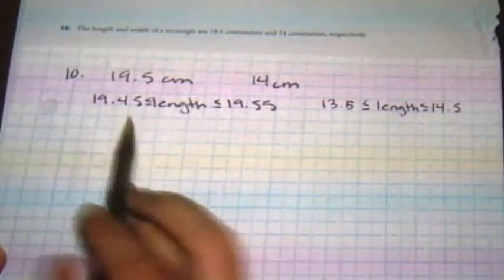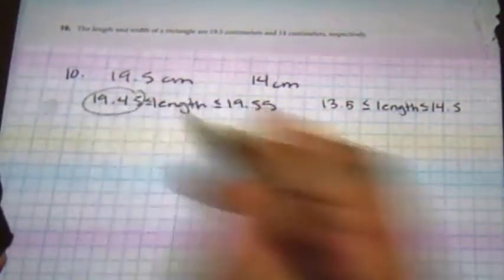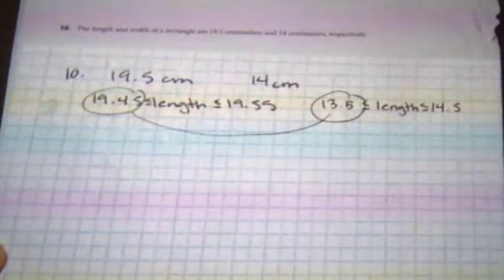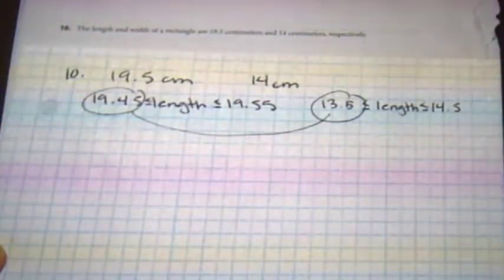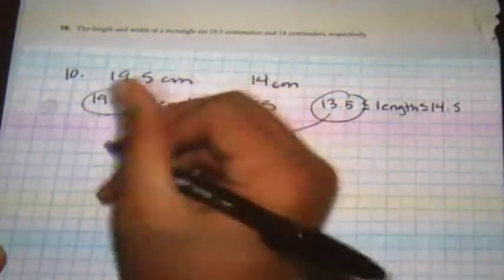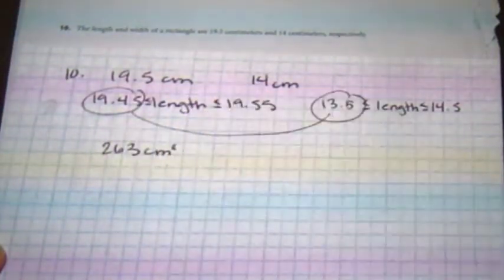So if I was to multiply these, I'd multiply the 19.45 by 13.5, which gives me 263 cm squared.